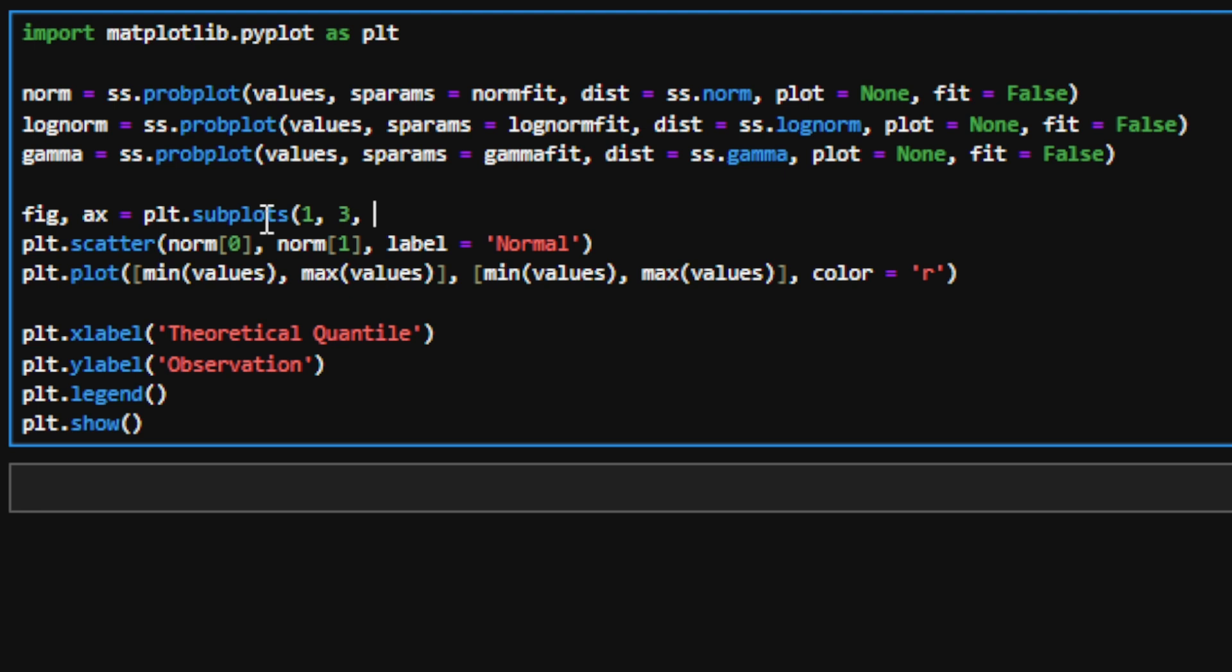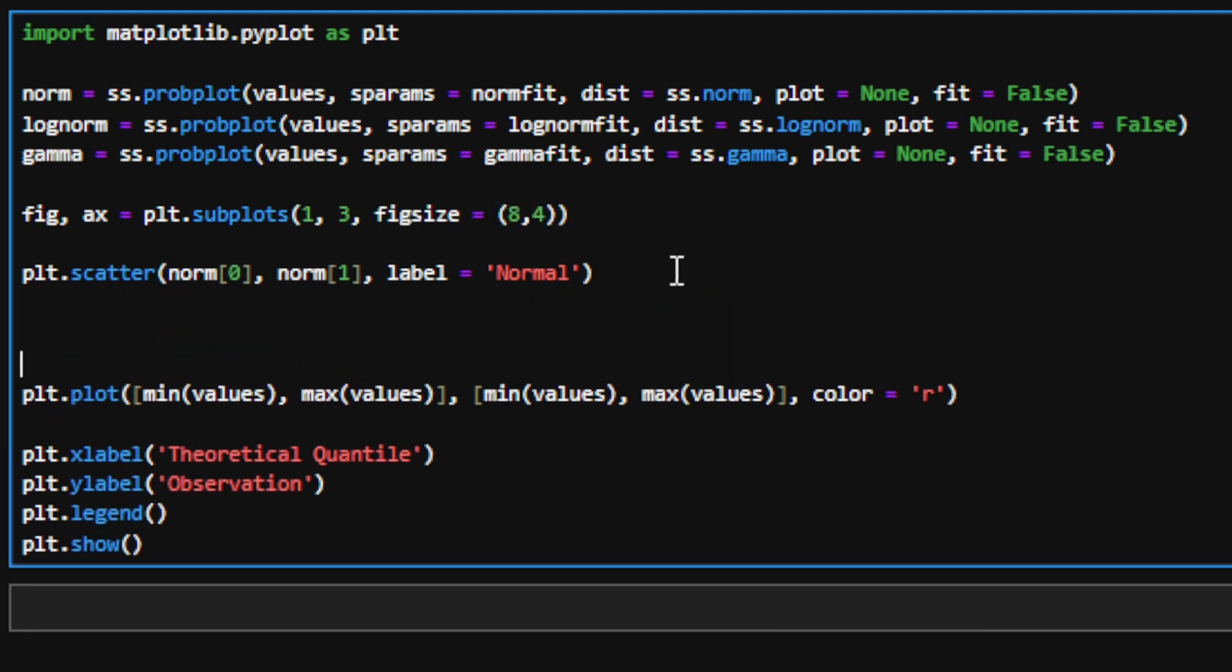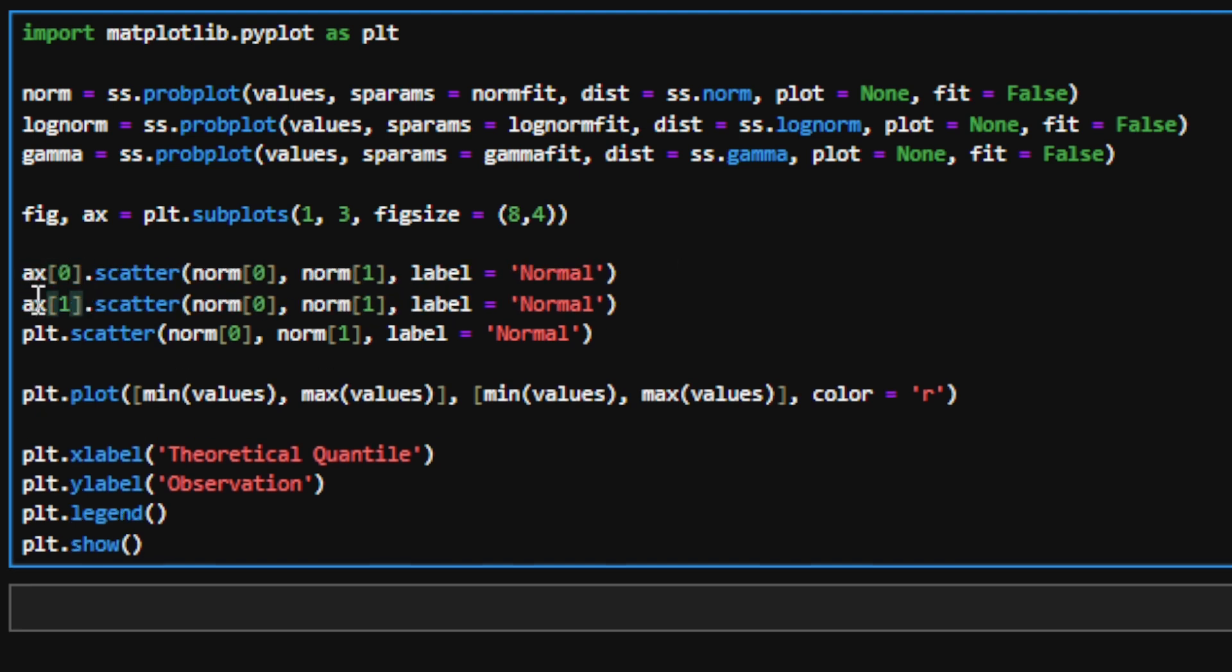Through subplots via matplotlib, I'll make three plots, one for each distribution, and have them be directly next to each other. Now let's define each scatter plot and note their empirical and theoretical quantiles.